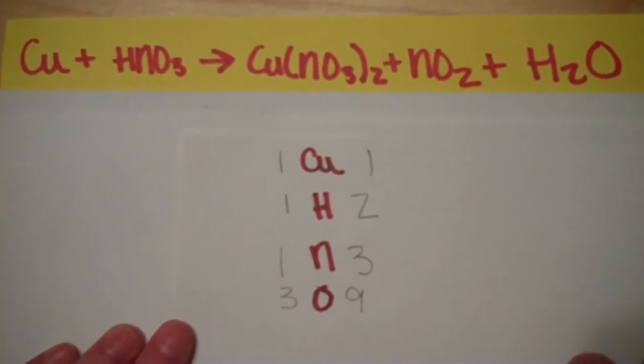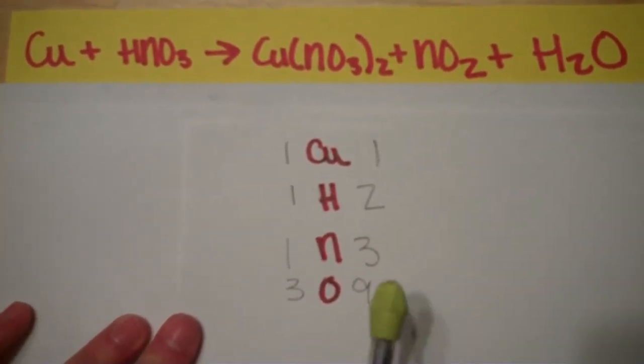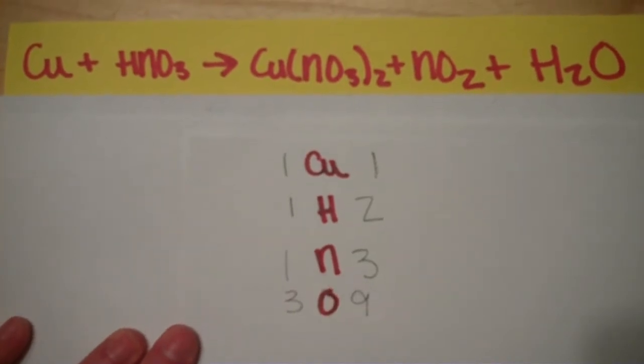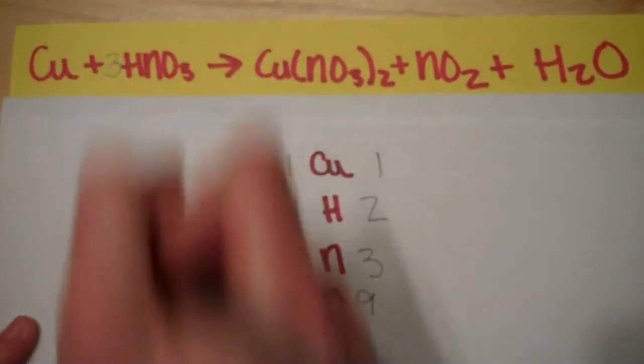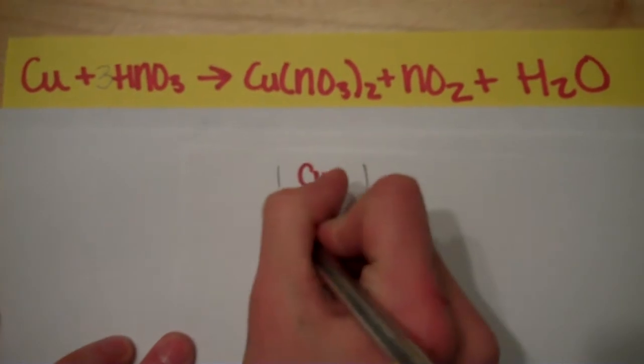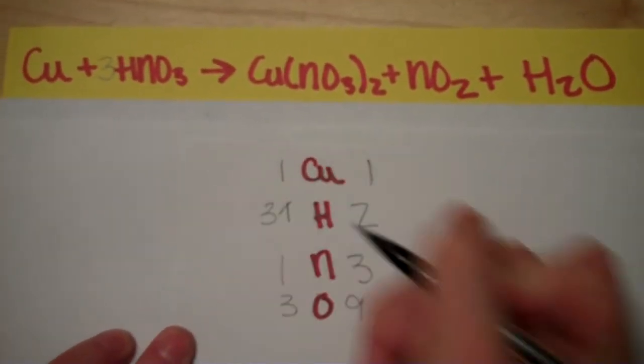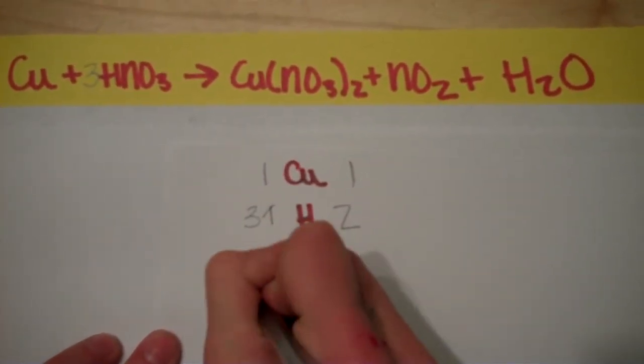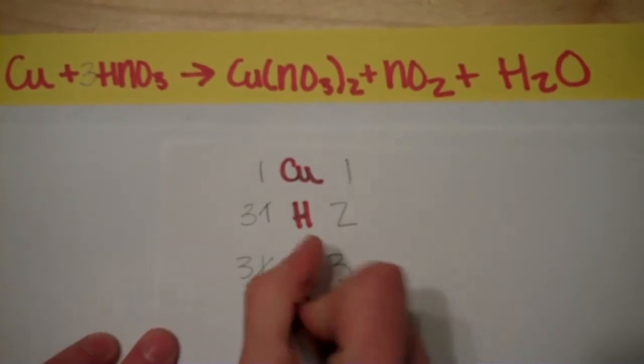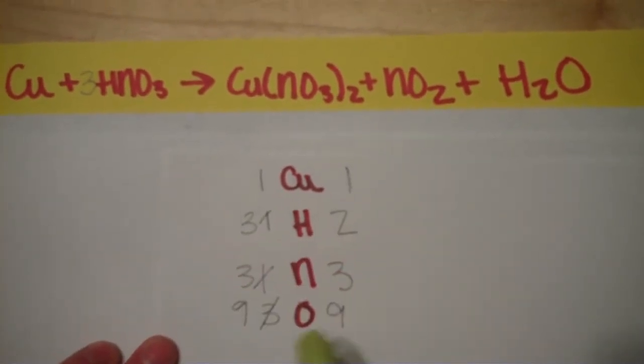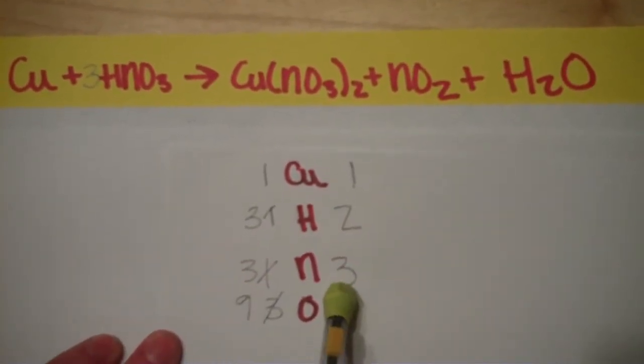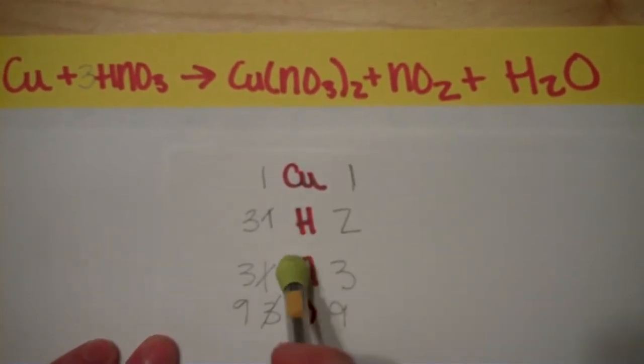Now let's start trying to even out nitrogen. So since there's three nitrogens on this side, we want to have three nitrogens on this side. So then that would change it to have three hydrogens, three nitrogens, and nine oxygens. So right now nitrogen and oxygen are equal, and so is copper, but hydrogen is not.